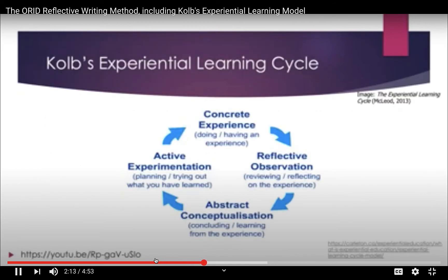This method is based on some really sound learning theory — in particular, it's based on Kolb's experiential learning cycle, and it's really simple: there are just four steps. The first step is Concrete Experience — you have an experience, that's all that means. The second part is Reflective Observation, because having an experience doesn't necessarily mean you're going to learn anything.